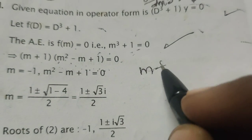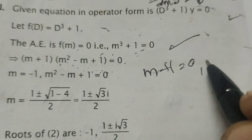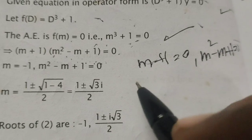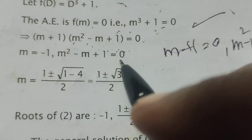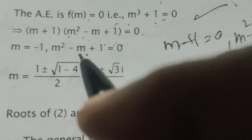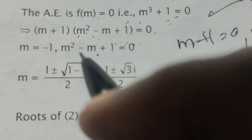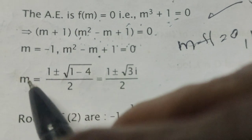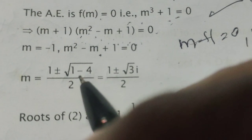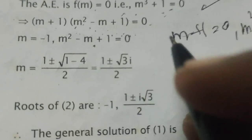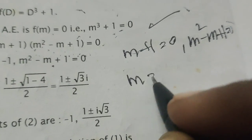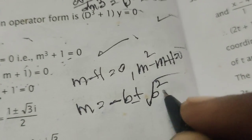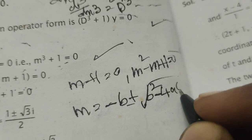Therefore, m + 1 = 0 gives m = -1, and m² - m + 1 = 0. For this quadratic, factorization is not applicable, so we use the formula: m = (-b ± √(b² - 4ac)) / 2a.